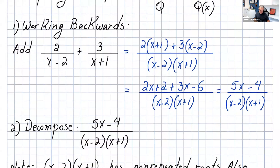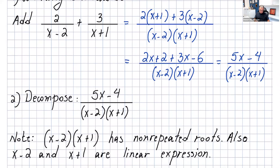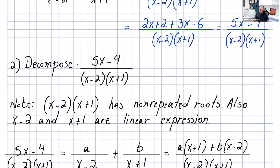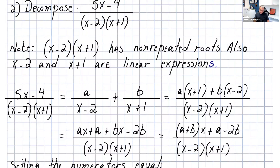Now if we are given this fraction and we want to decompose it, the first thing you do is look at the denominator. Note that x minus 2 times x plus 1 has non-repeated roots, and x minus 2 and x plus 1 are linear expressions. So if you want to decompose that, you write it as a over x minus 2 — a constant here, because if the denominator is a linear expression then the numerator will be a constant, one degree less — plus b over x plus 1 the same way.